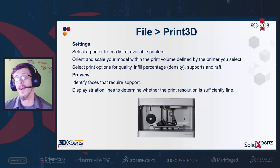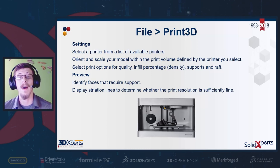Draft analysis was a shortcut, but there's a better tool called Print3D. To access it, go to File > Print3D. This allows you to envision your part inside the printer, see how it will fit, its best orientation, and preview it within the print volume. You can select a printer, orient and scale your model, choose infill percentage and supports, and even enable striation lines to see how layers will appear on curved surfaces.